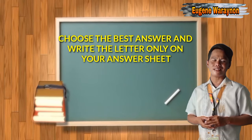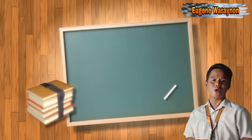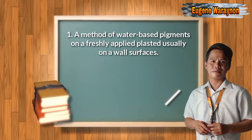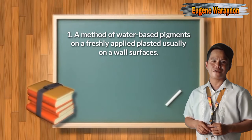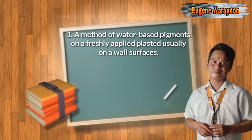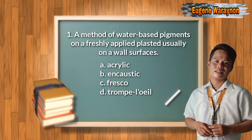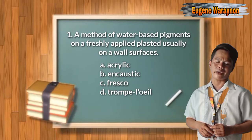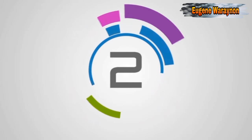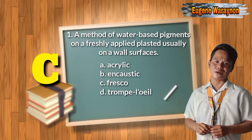Section B. Choose the best answer and write the letter only on your answer sheet. Number one: it is a method of painting water-based pigments on a freshly applied plaster, usually on wall surfaces. A. Acrylic, B. Encaustic, C. Fresco, D. Trompe-l'oeil. The answer is letter C, Fresco.